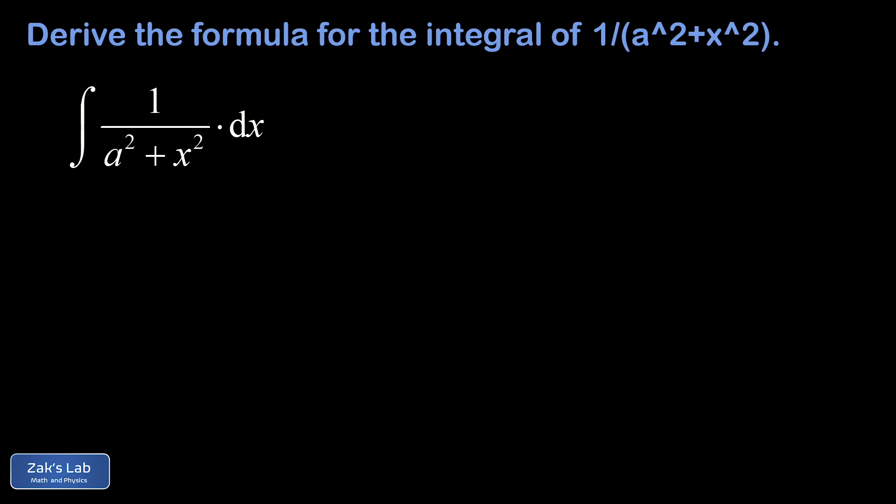I'm going to take the informal approach first where I just want to use the chain rule backwards. My first move here is that I want to put this into the form 1 over 1 plus some variable thing squared.